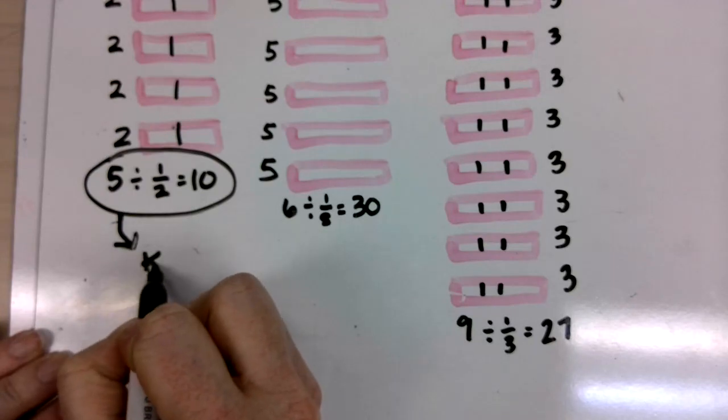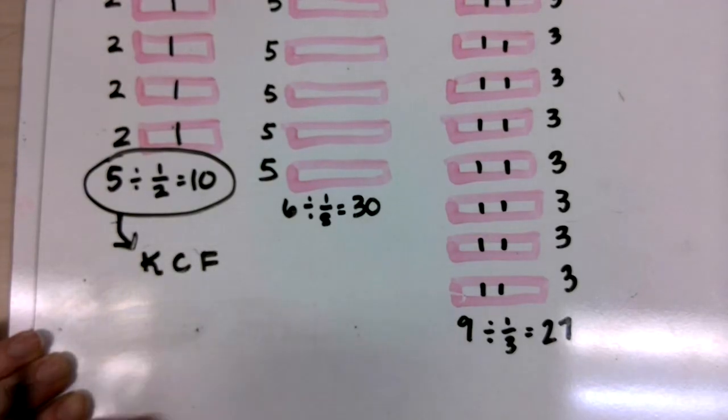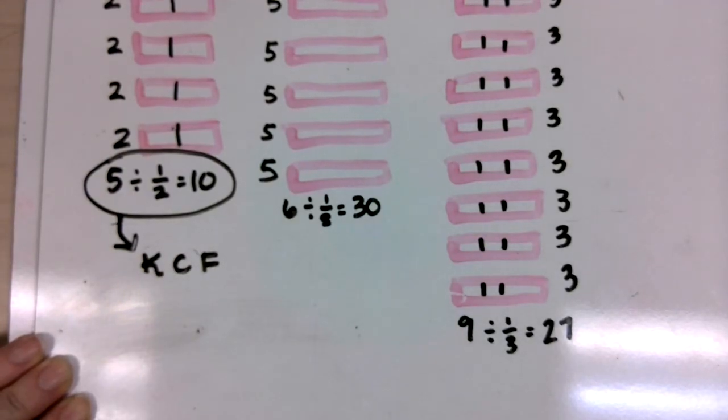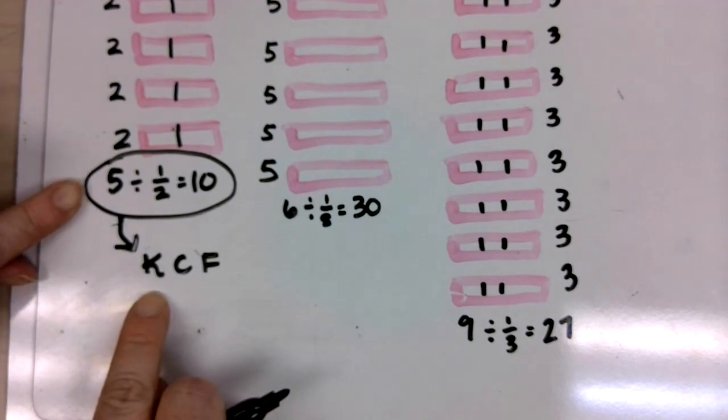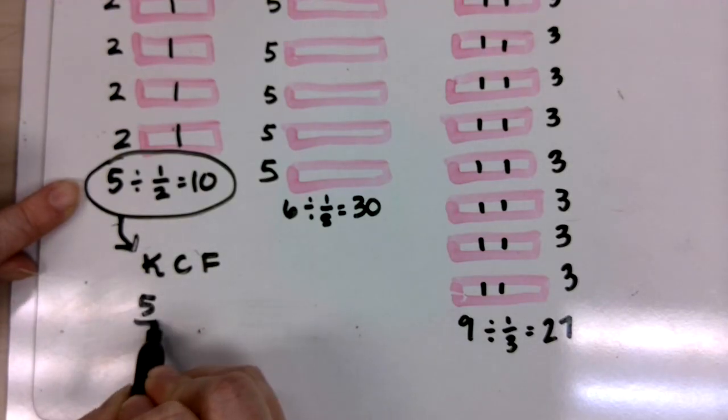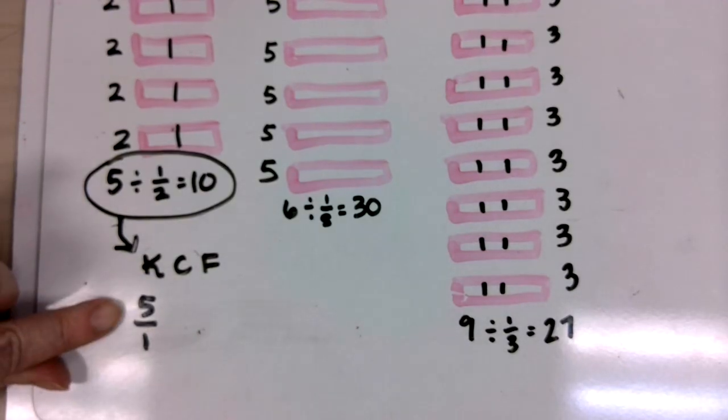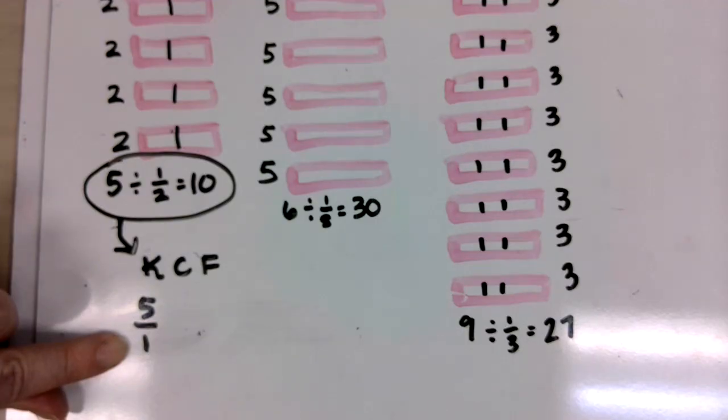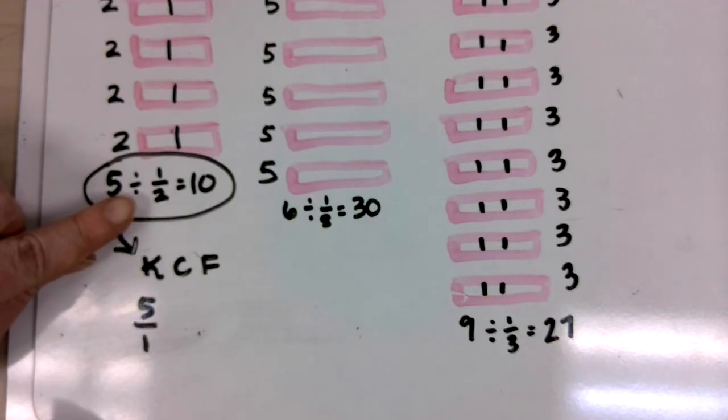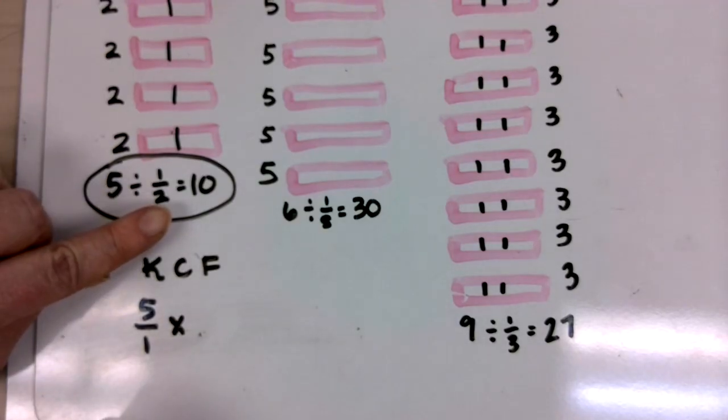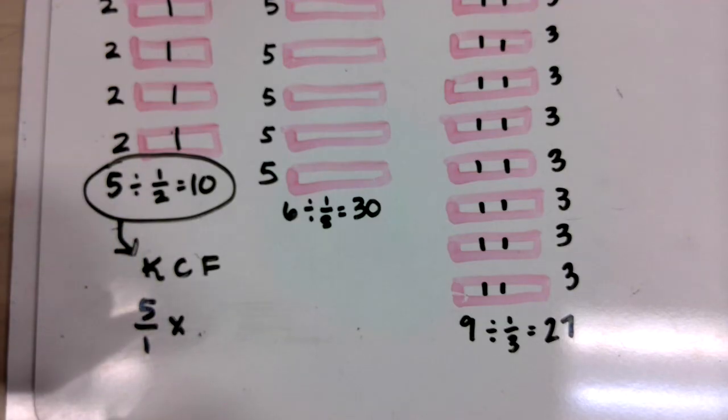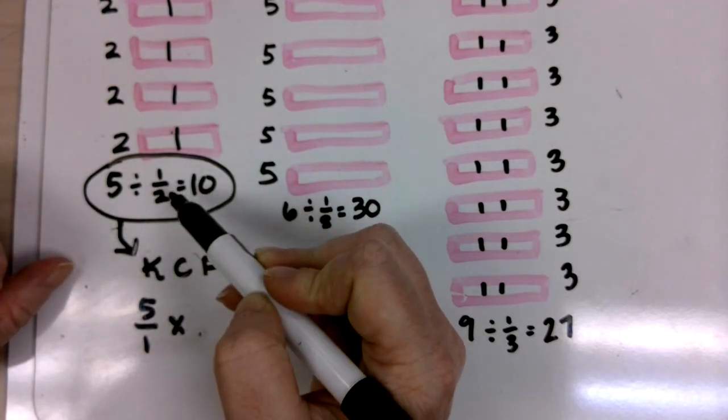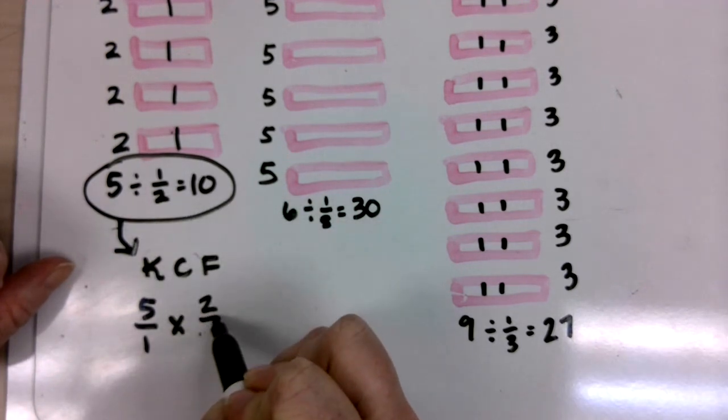In class, what we talked about was keep, change, flip. So we remember that we keep the first number just as it is. But I knew that I can make five a fraction by putting a one underneath it. This is still five wholes, right? Then we changed our division symbol, becomes a multiplication symbol. And our second fraction is flipped. It does a handstand, or mathematically we call it a reciprocal.